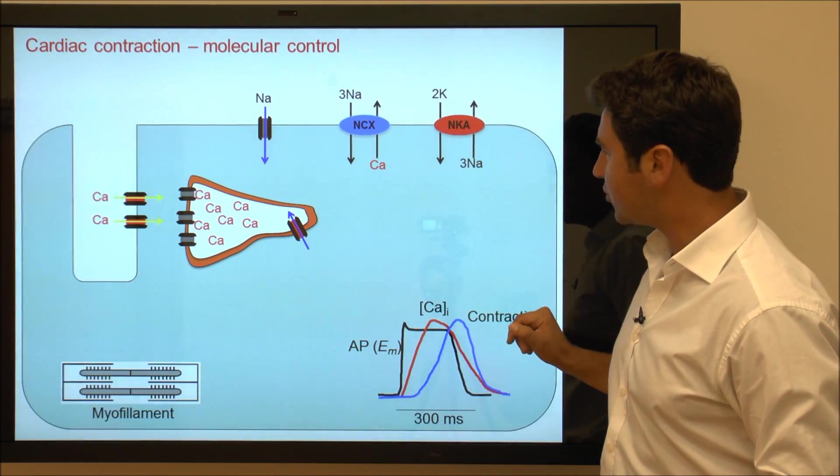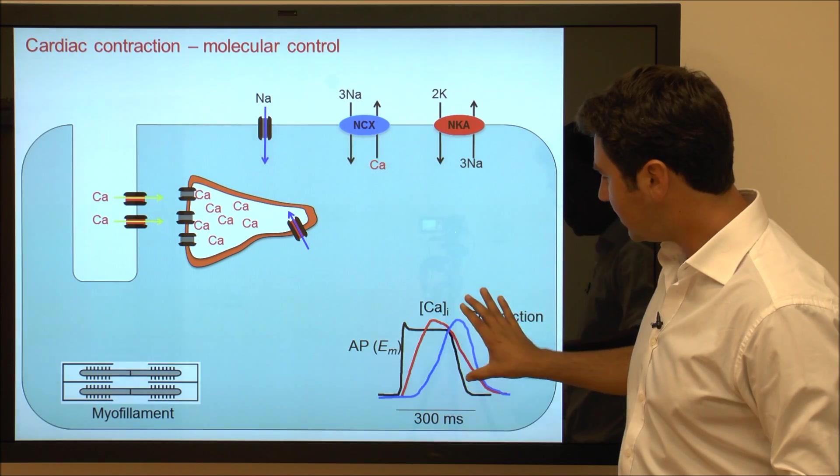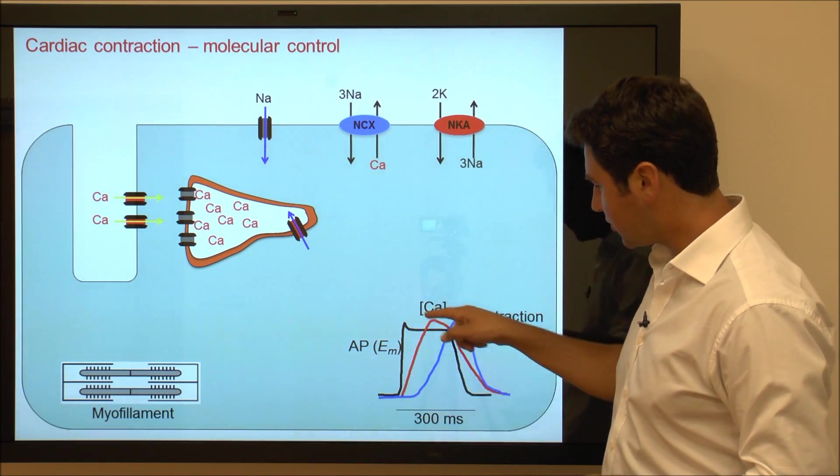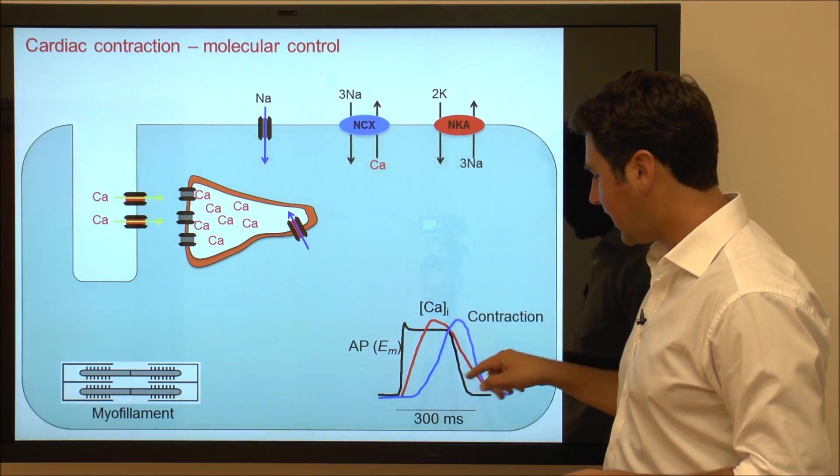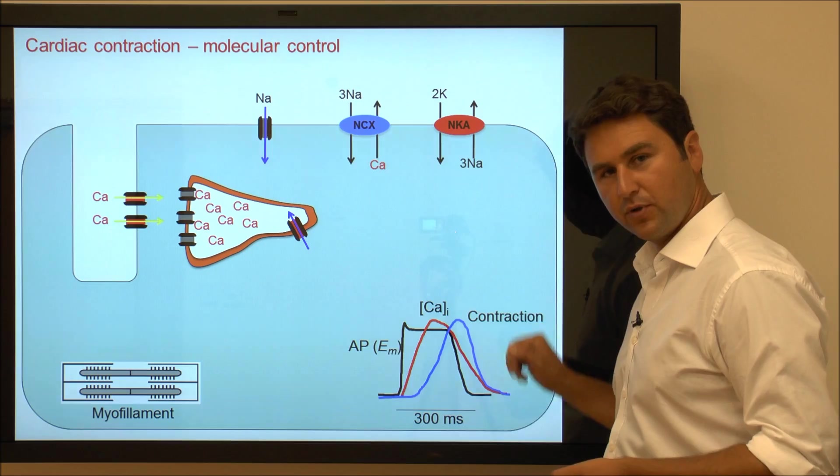Some of the major ion exchangers and transporters are also shown, and here on the right hand side we've overlapped the action potential shown in black with the intracellular calcium and contraction shown in red and blue respectively.